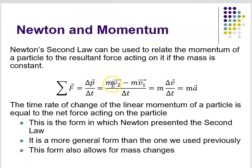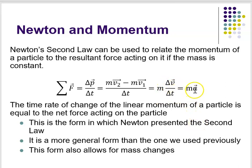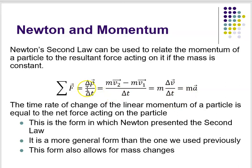Now, remember that the momentum is the mass times the velocity. So let's say that you've got velocities at time t1 and t2 of v1 and v2. So your change in momentum would be mv2 minus mv1 over your delta t, or m delta v over delta t. And since the definition of the average acceleration is delta v over delta t, it can be written as ma.